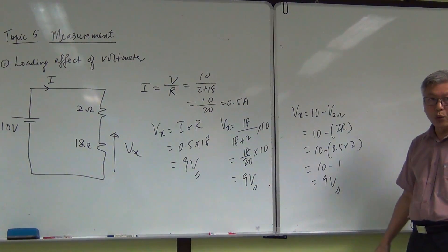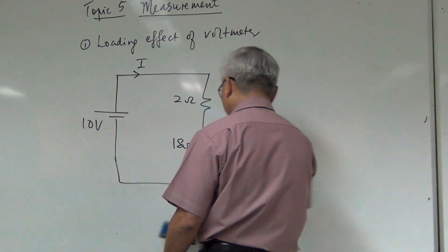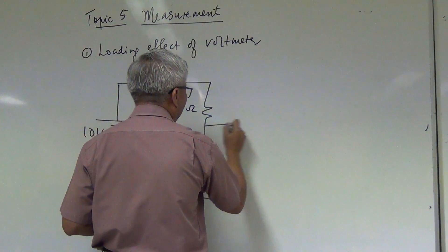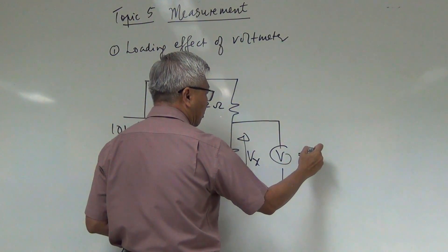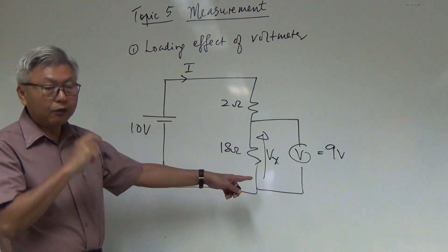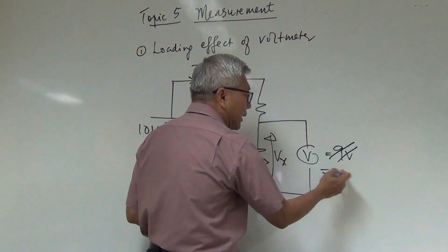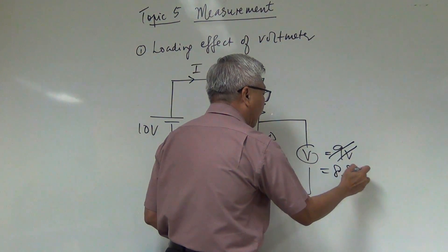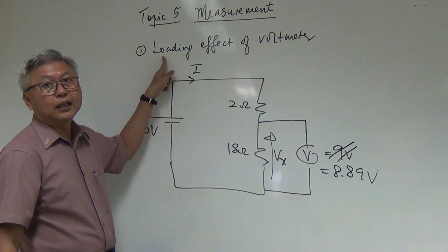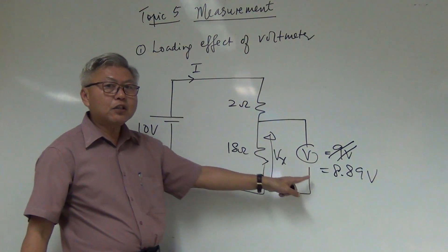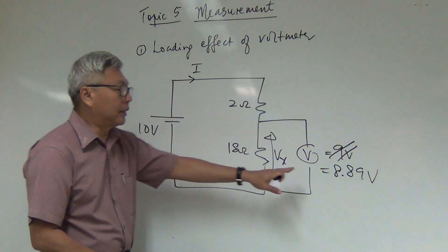So that is my voltage across the 18 ohm. Now what happens if I connect a voltmeter across it? When I connect a voltmeter across the 18 ohm to measure its voltage, I expect the reading to be 9 volts as well. But unfortunately the voltmeter has an internal resistance, and this internal resistance will affect the reading — the reading will no longer be 9 volts; it will be less, say for example 8.89 volts. This effect is called the loading effect — the change in voltage across the resistor due to the internal resistance of the voltmeter.